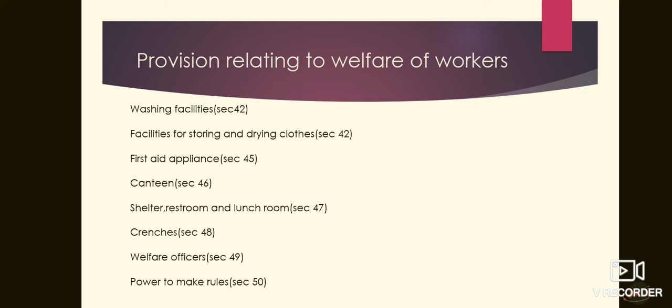Next is facilities for storing and drying clothes. The state government may make rules regarding the provision of suitable space for keeping clothes not worn during working hours and for the drying of wet clothing, in respect of any factory or class of factory. This ensures wet clothes can be dried within the factory premises.